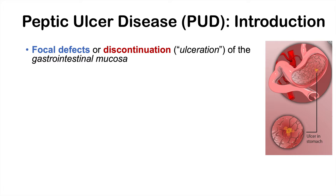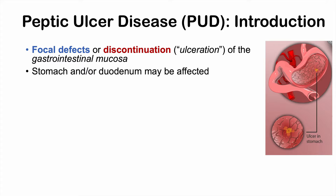We're not going to talk about esophageal ulcers in this lesson, but we're going to talk about ulcers that affect the stomach and the duodenum, or the first part of the small intestine. When an ulcer affects the stomach, that is a gastric ulcer, and when an ulcer affects the duodenum, that is a duodenal ulcer.